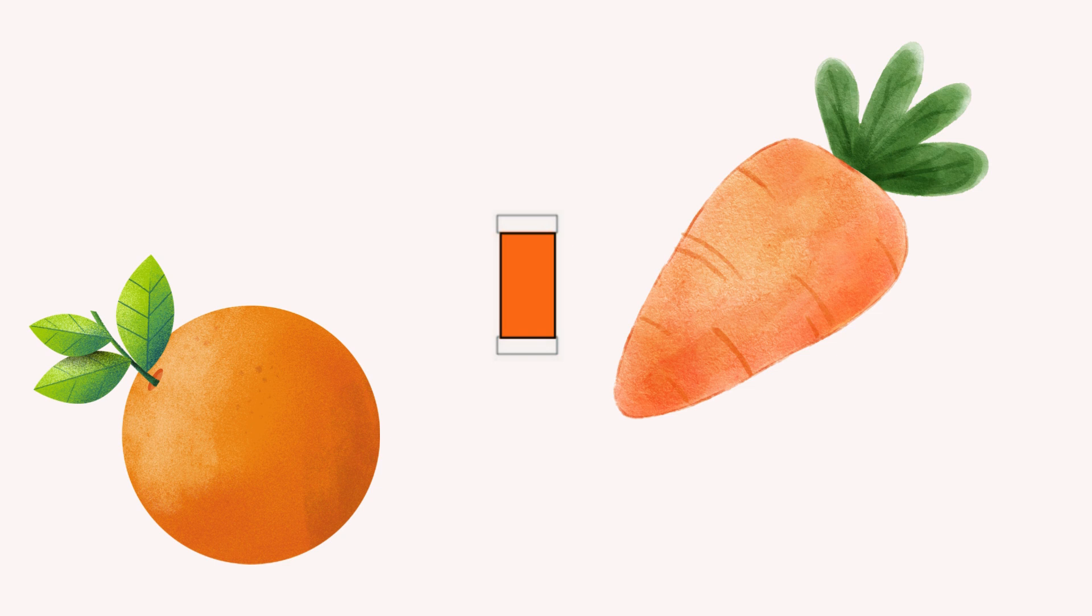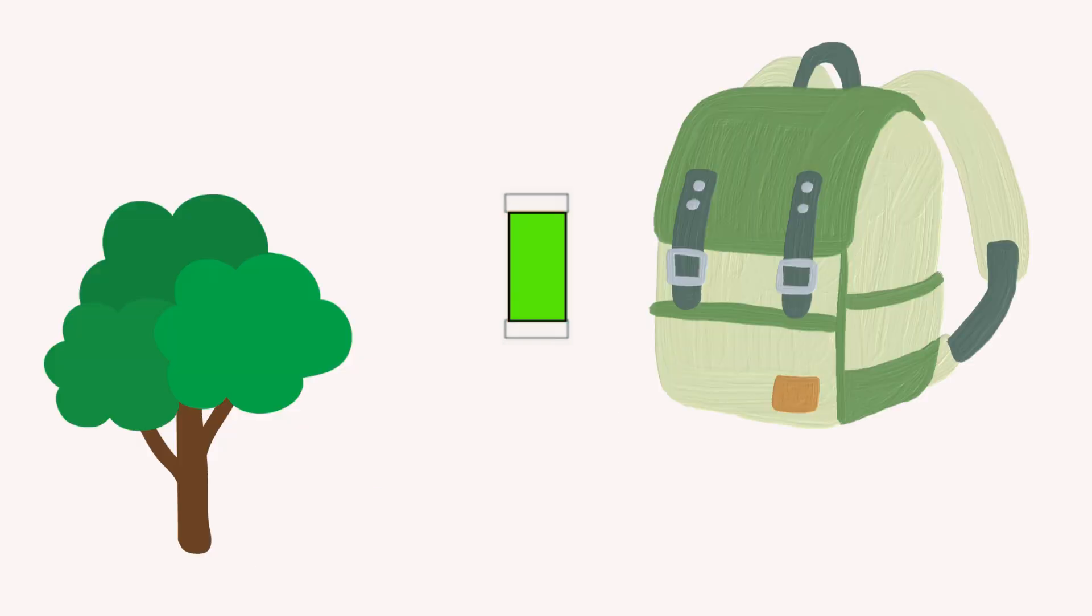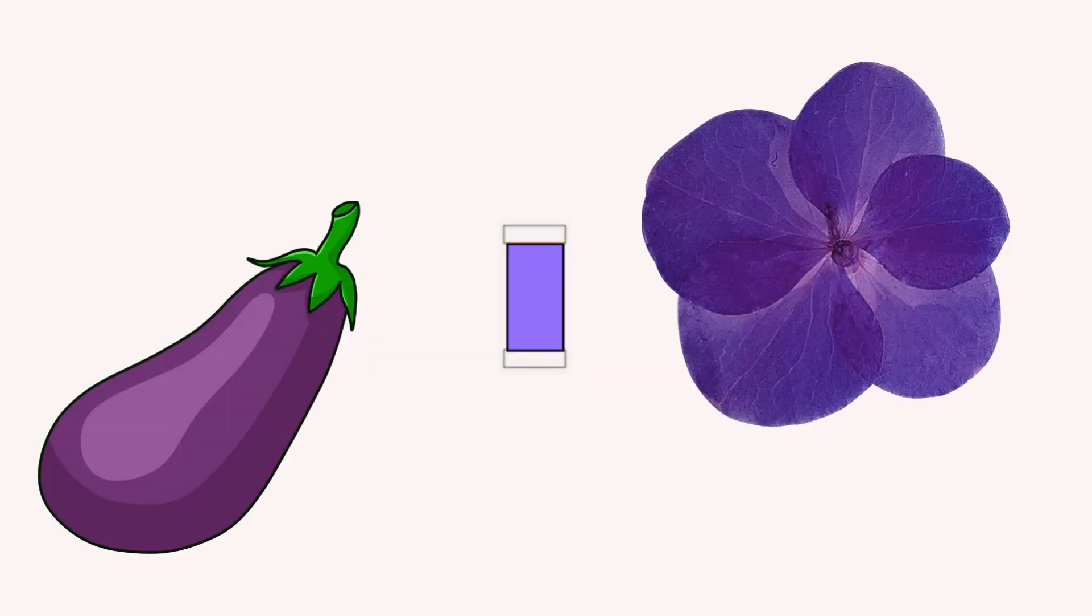Look here! An orange and a carrot! Here! We have a green tree and a green backpack! Here! We have a purple eggplant and a purple flower!